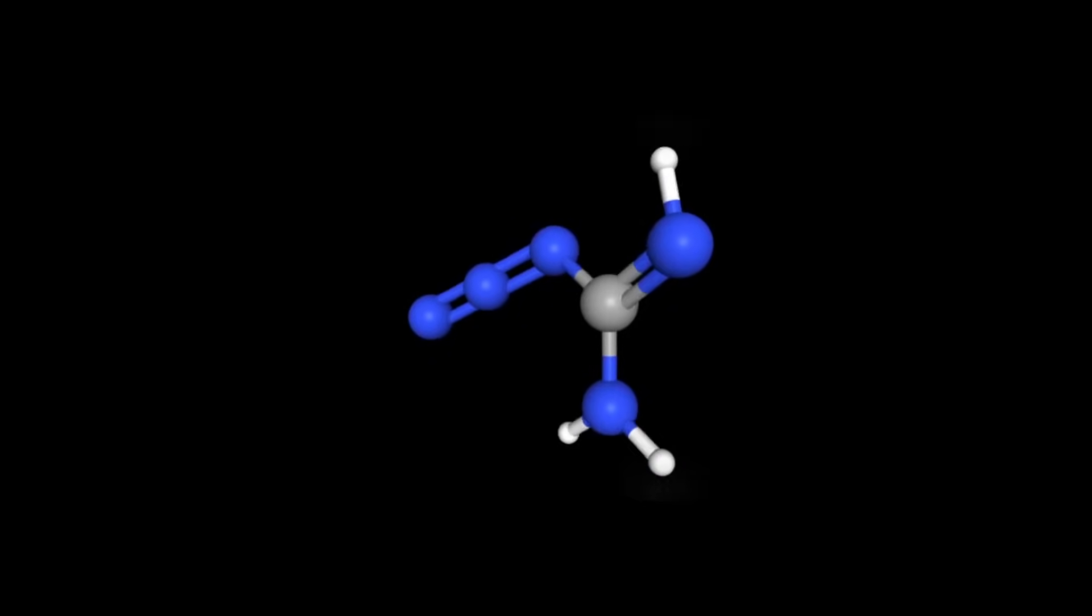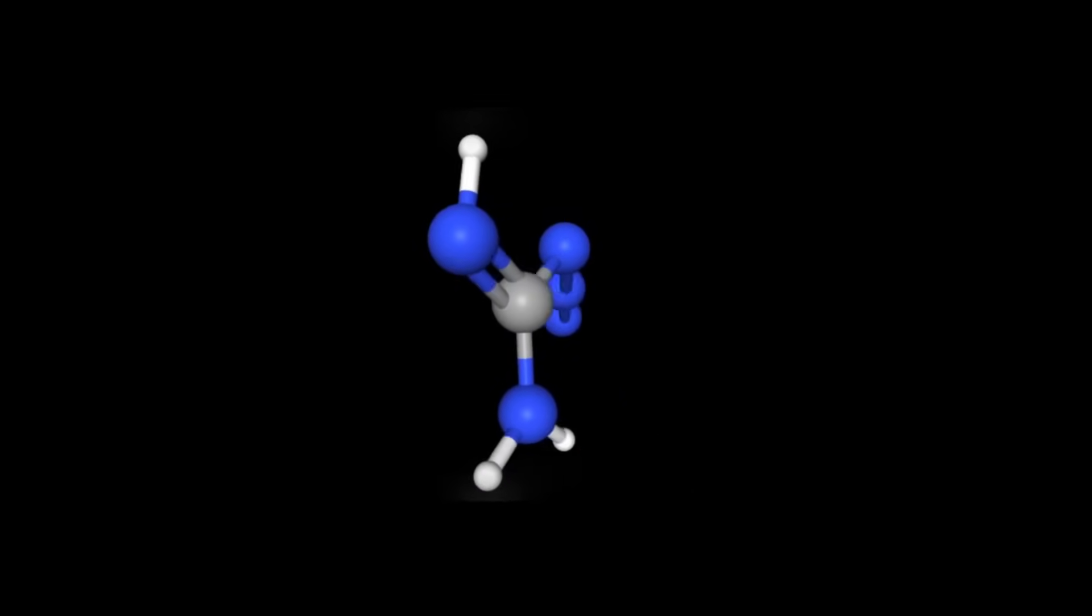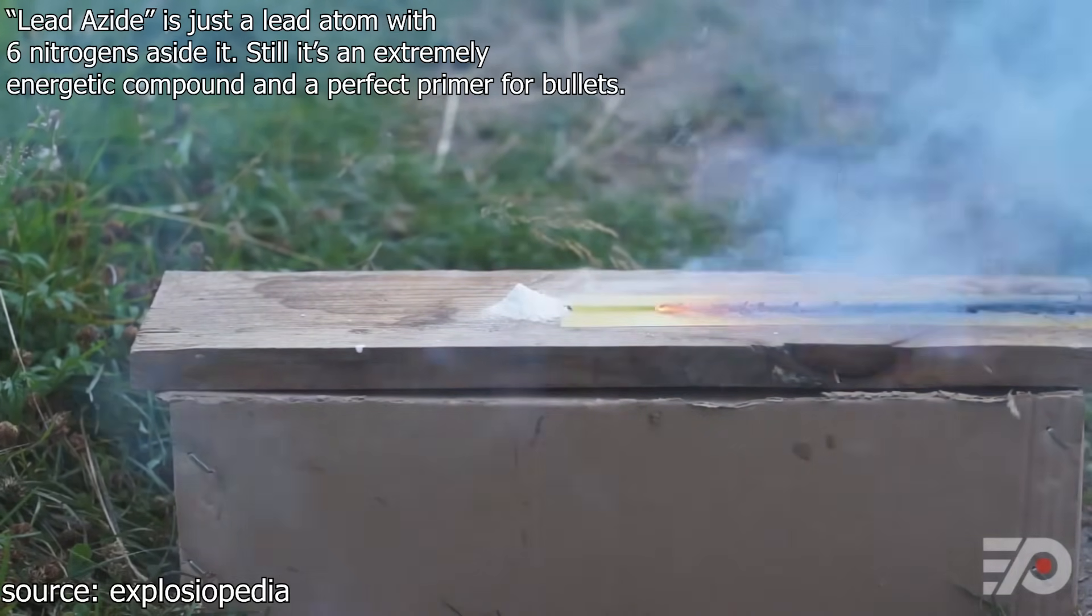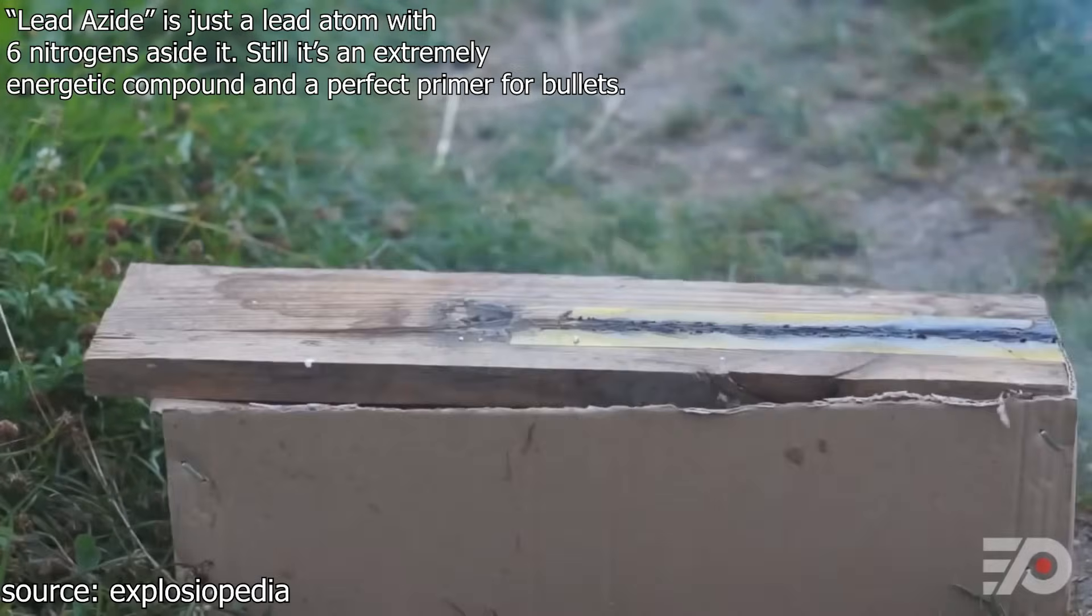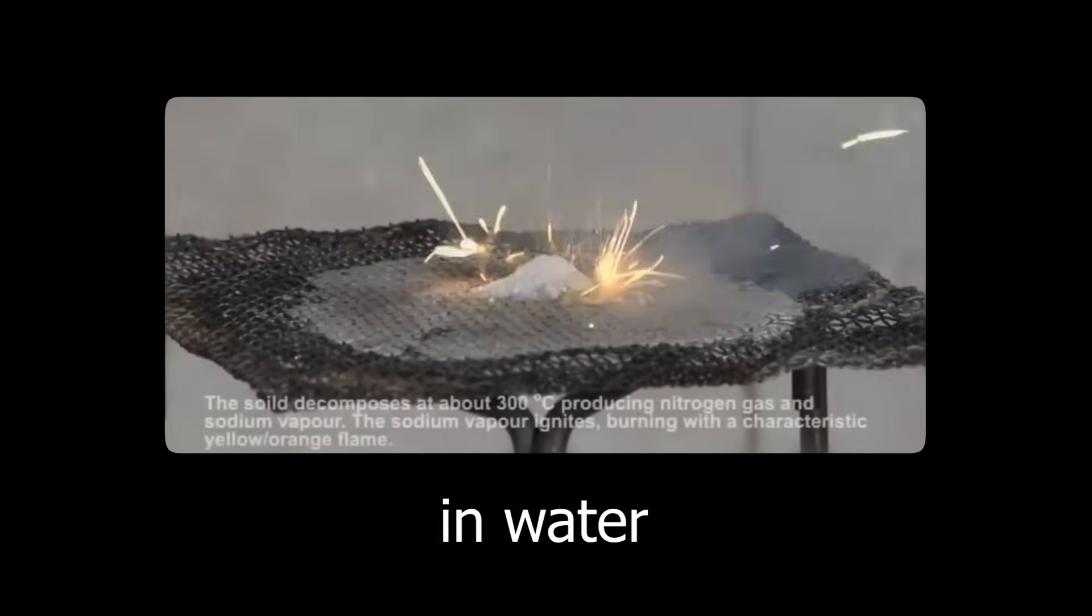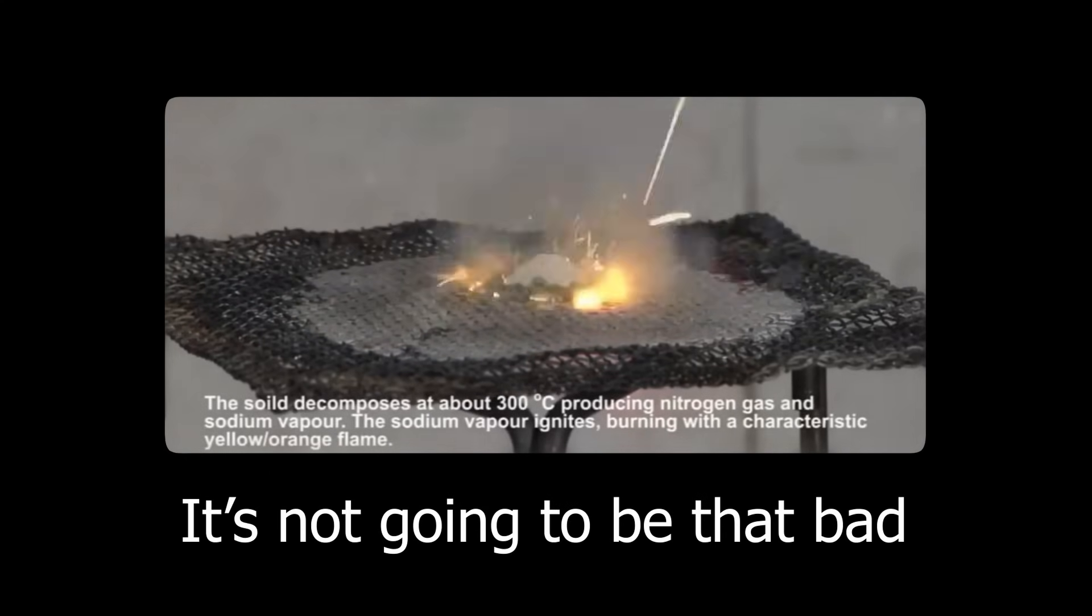Anyway, for the next step, and the second to last step, the paper entails that we make an azide intermediate. For those who aren't that into chemistry, an azide is an extremely dangerous ion to be around, since it's usually really explosive. However, because the azide is just an intermediate and is going to be dissolved in water, it's not going to be that bad.